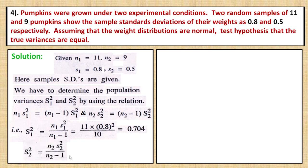Similarly, S₂² equals n₂s₂² by (n₂ - 1). Applying the corresponding values gives us 0.281. Now we can calculate capital F as S₁² by S₂².